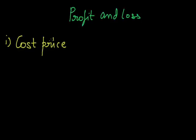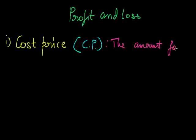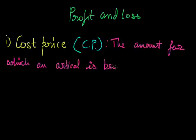Cost price is written in short as CP. It is the amount for which an article is bought — that is, the price at which we buy an article from the market is the cost price for us. For example, if I buy a packet of surf at Rs. 20, then Rs. 20 is the cost price for me.